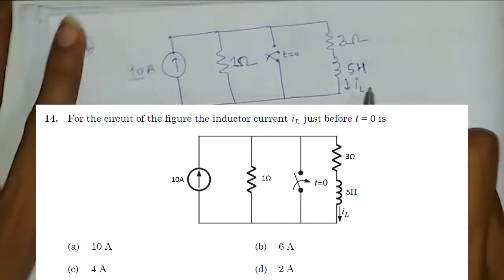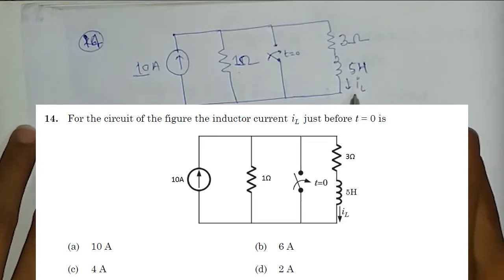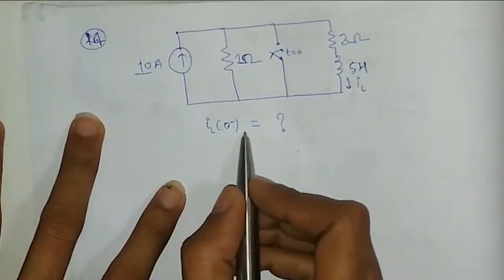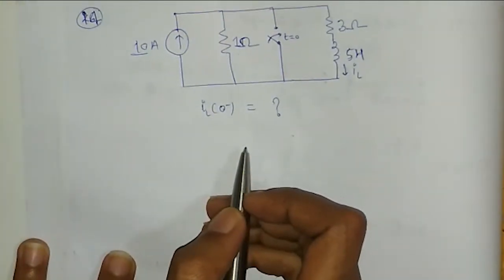We have to find the current through inductor before this switch is closed. We have to find the iL(0-). So, at t = 0-,